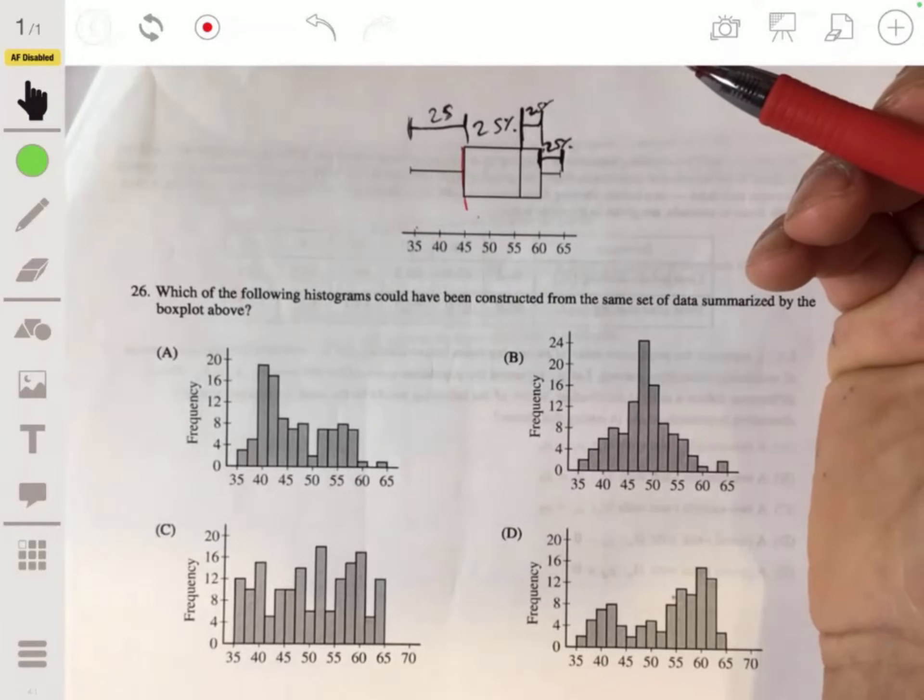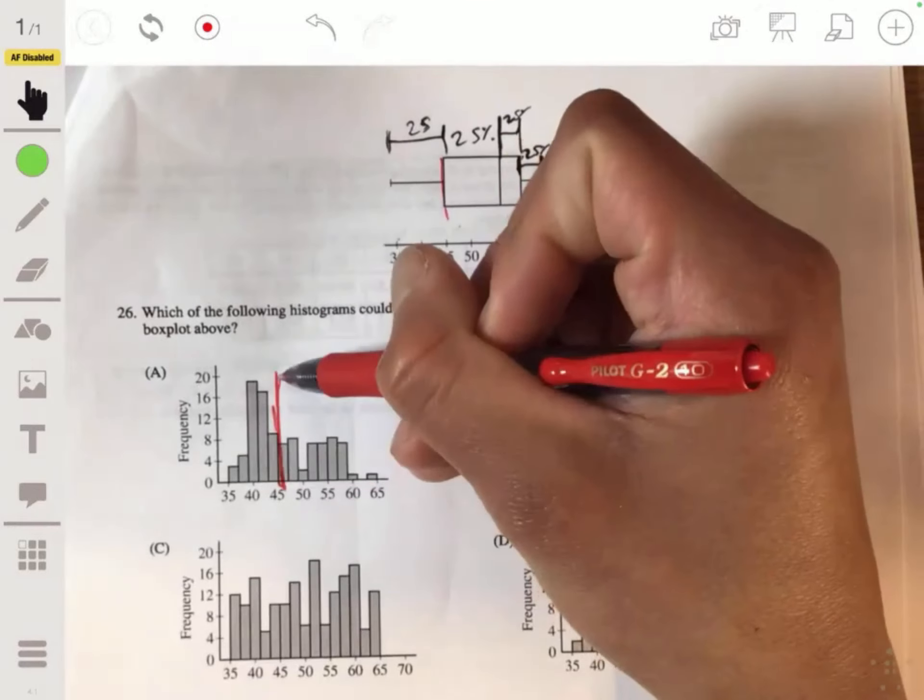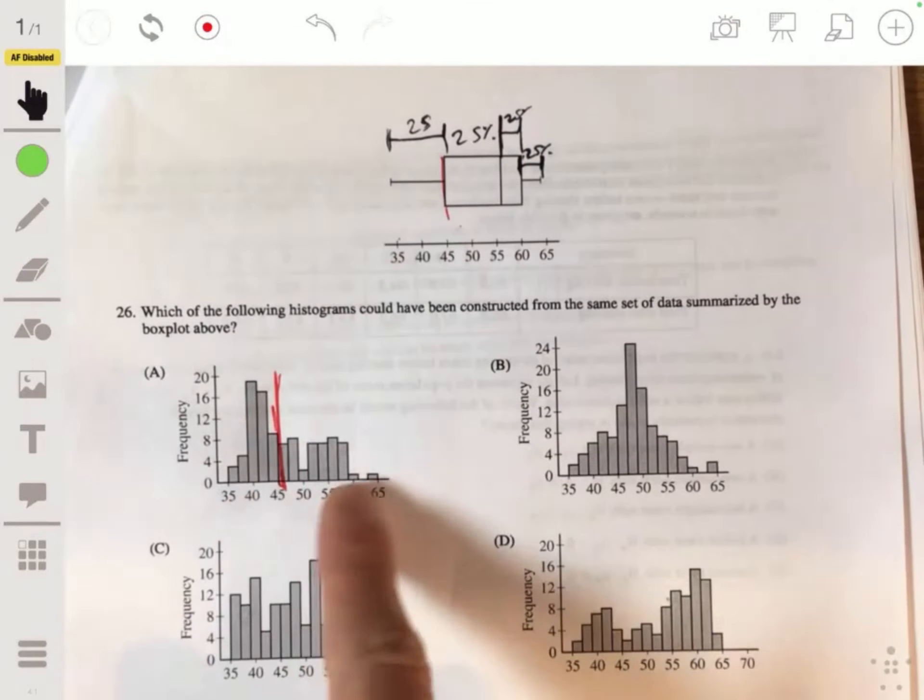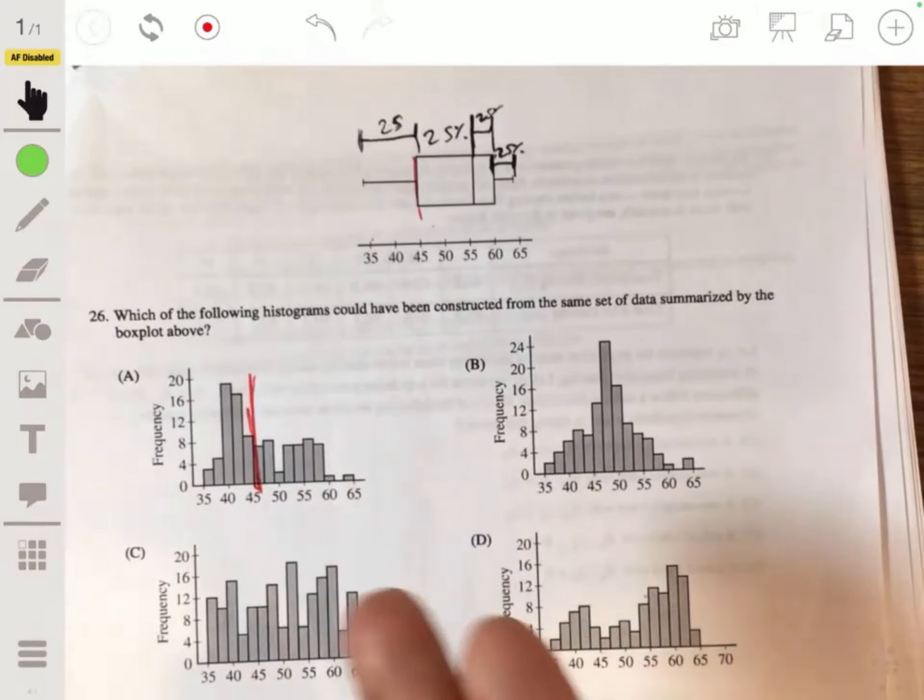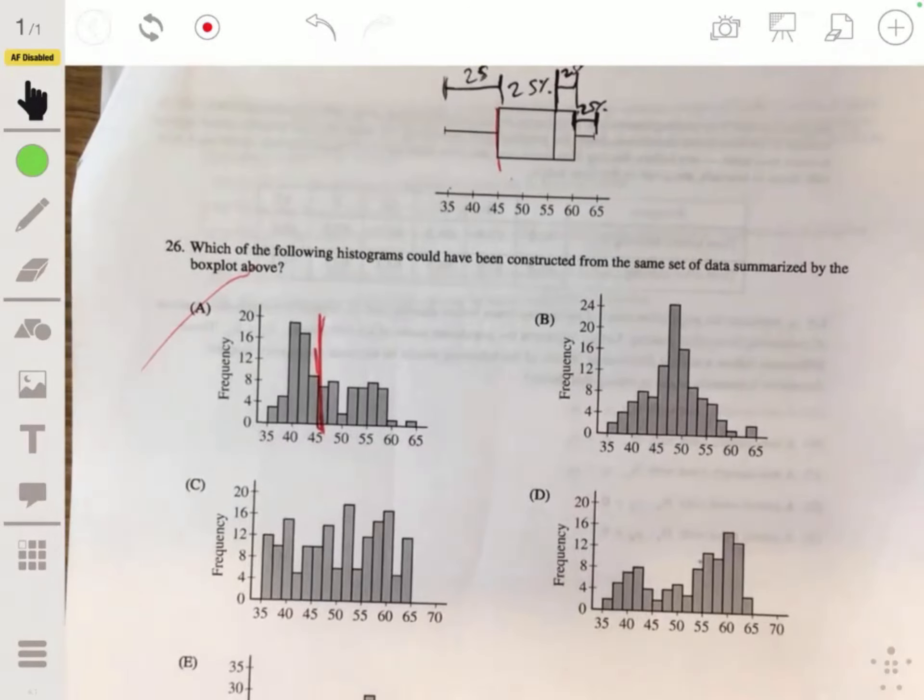So the first one, you can see it's not even going to be close because that's saying this is only a fourth of all the rest. This is more than half already, so it's not going to be A.